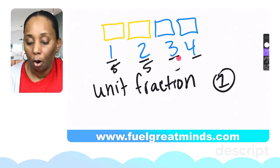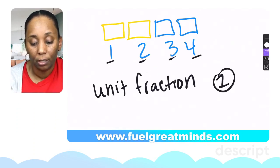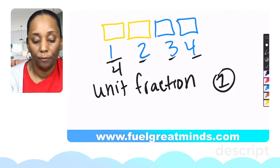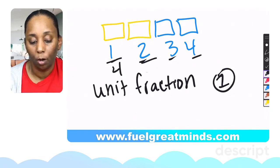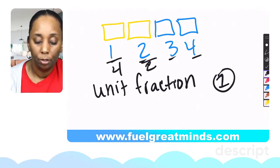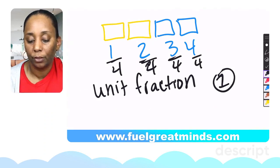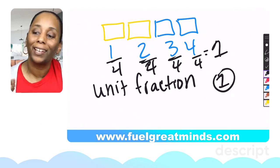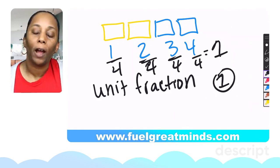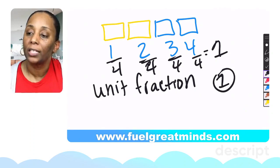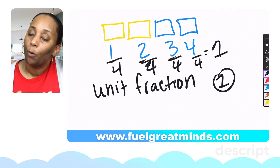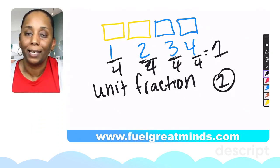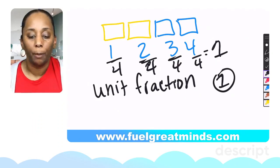The unit fraction goes from whole numbers to one fifth, two fifths, three fifths, four fifths, five fifths — or one whole. If I erase and change the whole, the unit fraction is now one fourth: one fourth, two fourths, three fourths, four fourths or one whole. Understanding unit fractions can then be extended to factors and multiples.